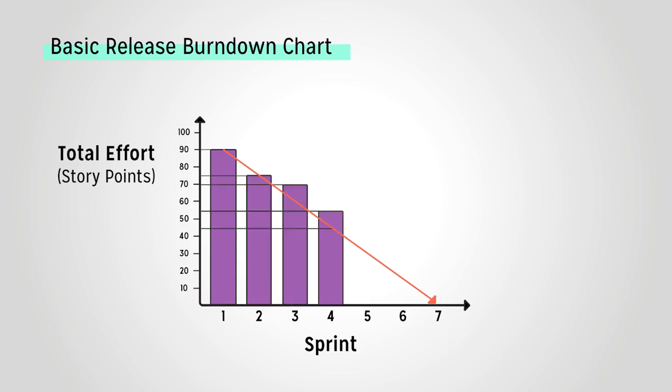You can also use the prediction line to see if you are on track with development. Let's say we have just completed sprint 4. In the first sprint we completed 15 story points, and we wanted to maintain that pace — that is the prediction line. However, in sprint 2 we only completed 5 story points, so our bar for sprint 3 is now above the prediction line. In sprint 3, we completed 15 story points and got our velocity back, but we're still behind schedule because of sprint 2.